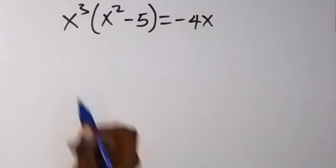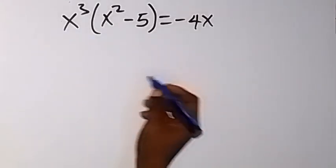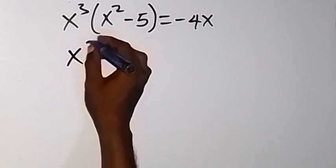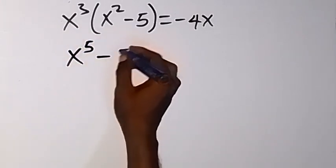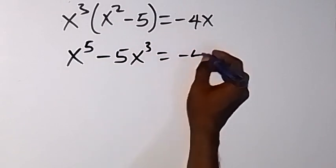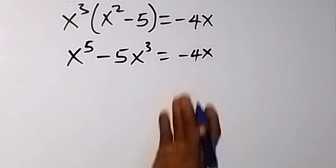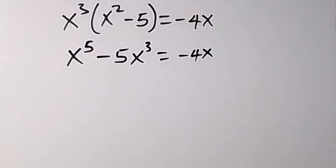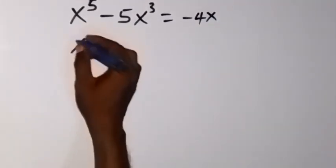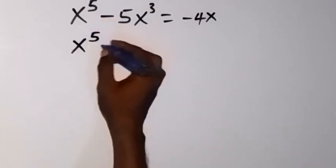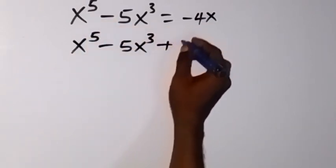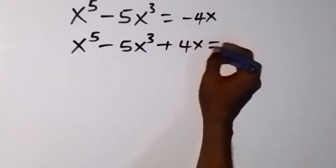So here let us use x³ to open this bracket, and this will give us x⁵ - 5x³ = -4x. We can also bring this -4x to this side so that we now have x⁵ - 5x³ + 4x = 0.